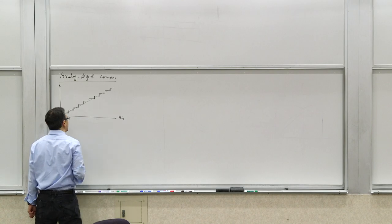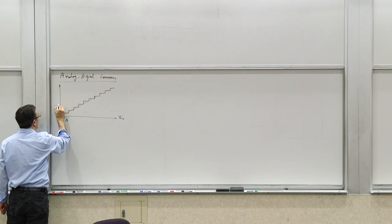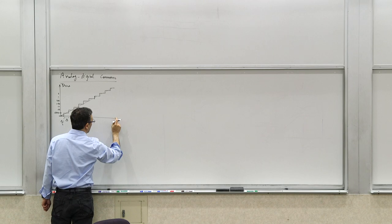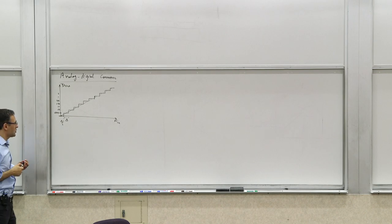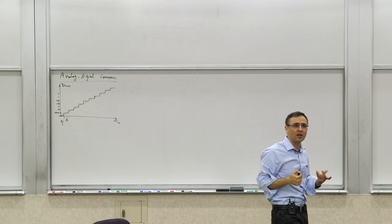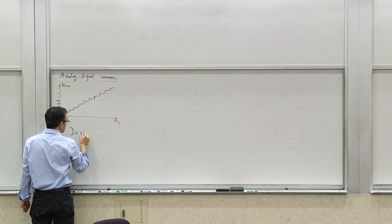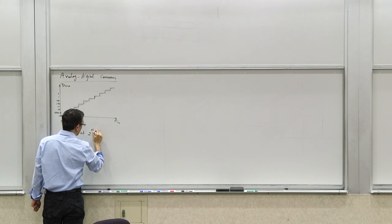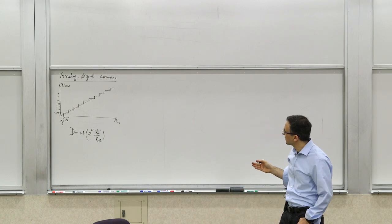What you would like to see is something like a staircase, and these are the digital words — 000, 001, 010, 011, 100, 101, 110, 111, et cetera. So this is the digital out versus the analog in. This is what an ideal A to D should produce. You can express the digital output as the integer value of 2^N times Vin divided by Vref — that's essentially what the digital output looks like.